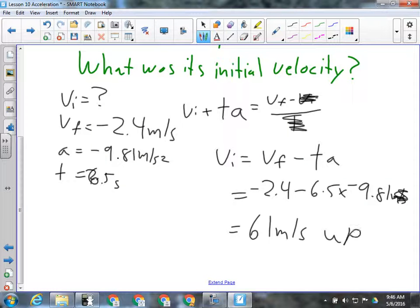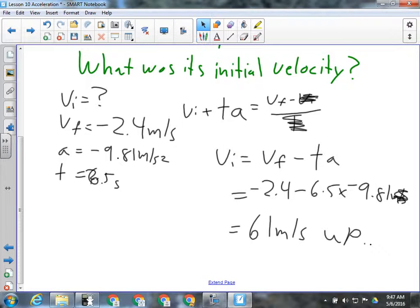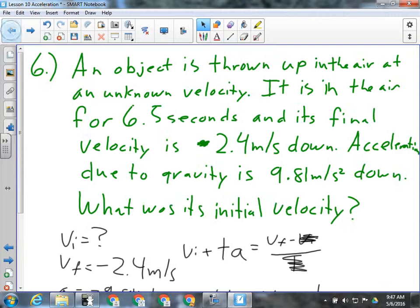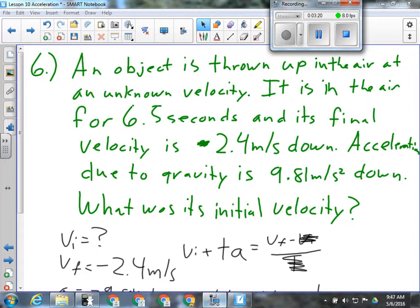All right, and we talked about this yesterday, I think, a little bit as well, in that the question gave me up and down. It didn't give me positive and negative. So my final answer should reflect what the question gave me. I don't want to write positive here. The question said up and down. I go with up and down. All right, questions on how that one works? Like I said yesterday, that's about as involved as a question would get for you in terms of an acceleration problem. All right, now, we're going to do some practice on this.